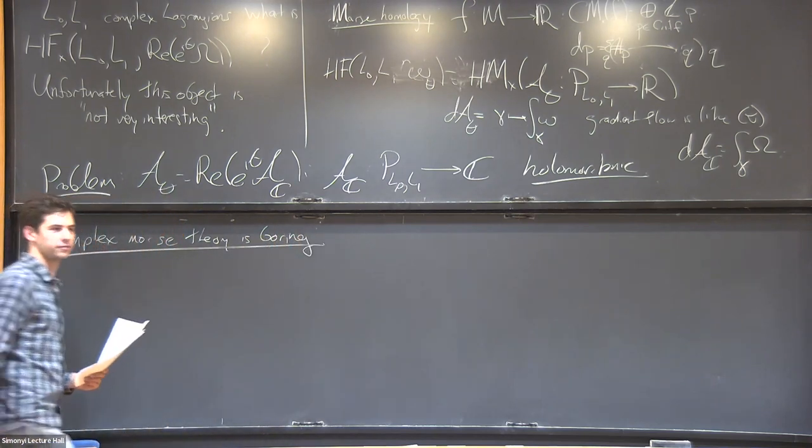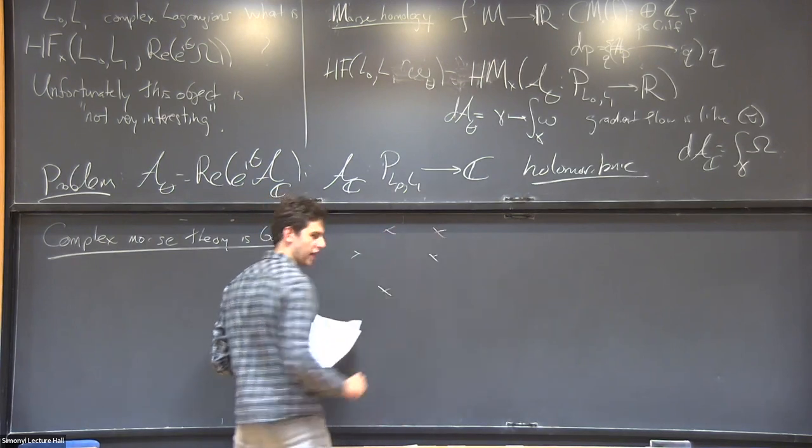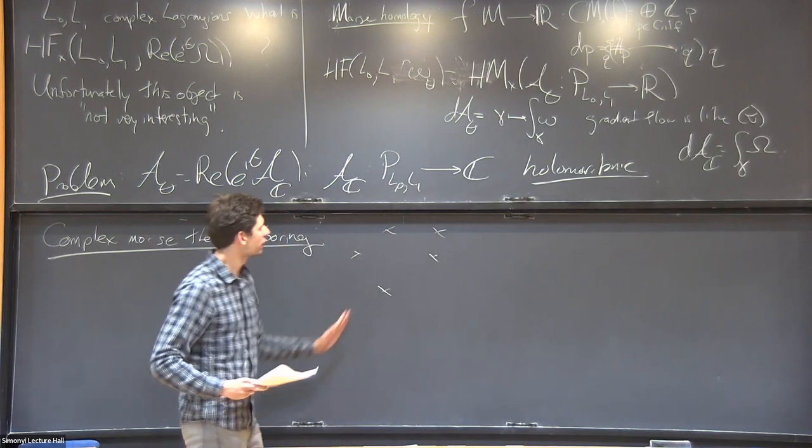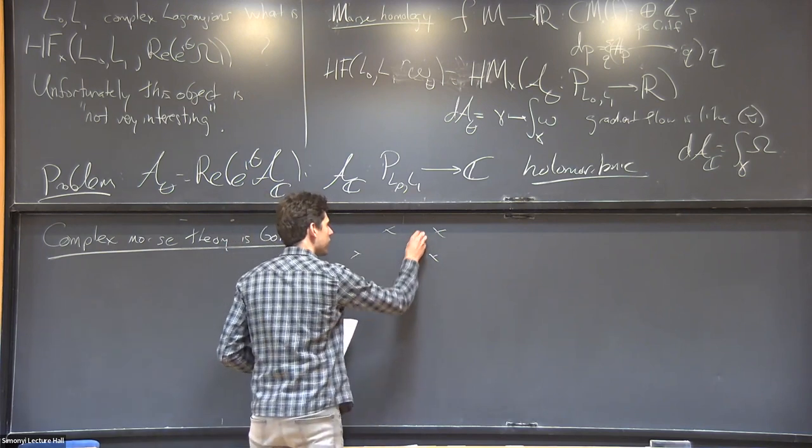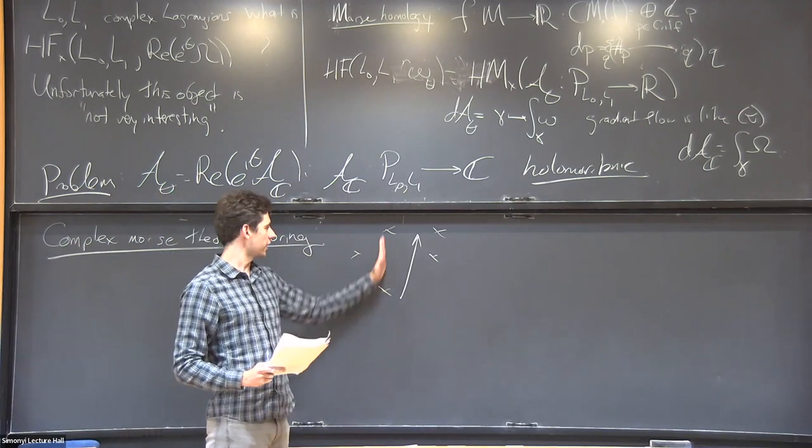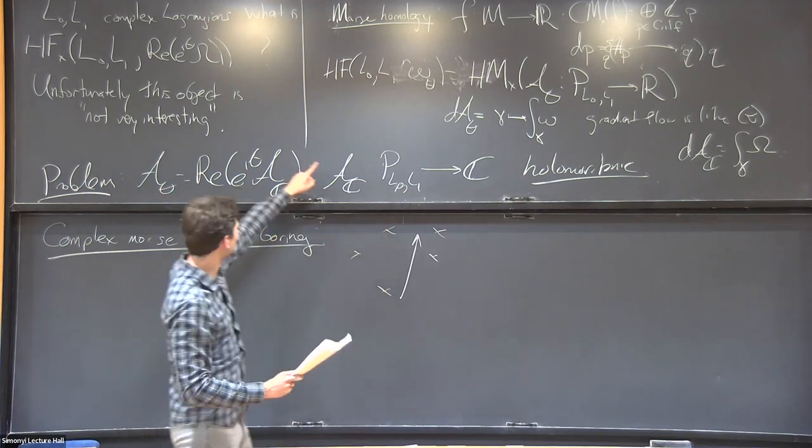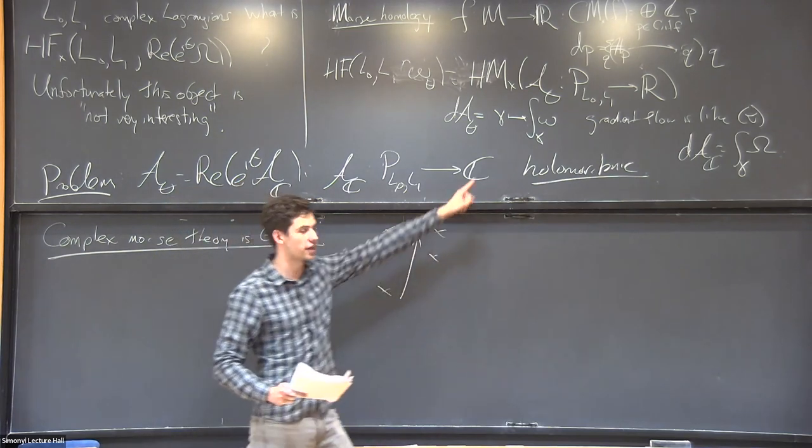Complex Morse theory is boring because if you project the critical points to the complex plane and you look at the gradient flow of the real part of any one of these functions, then the gradient flows project in a straight line. That means if you have finitely many critical points and you choose a generic theta, there's not going to be any gradient flows. So the differential vanishes.